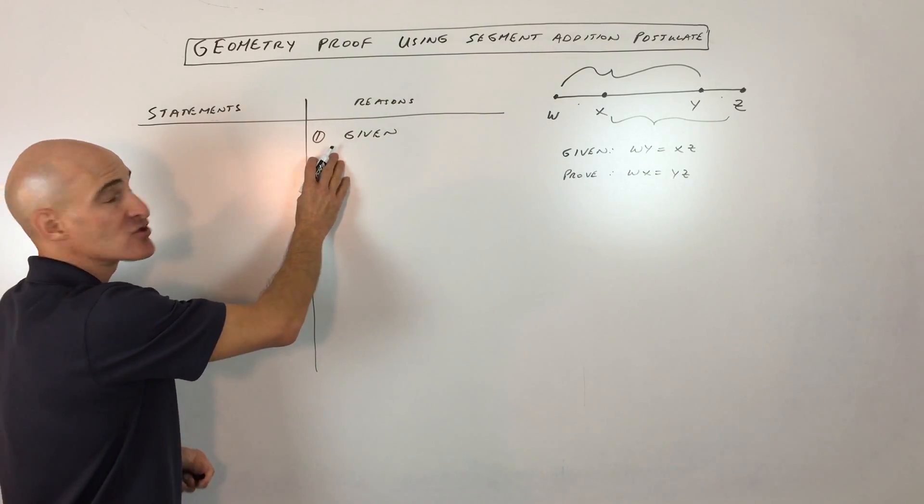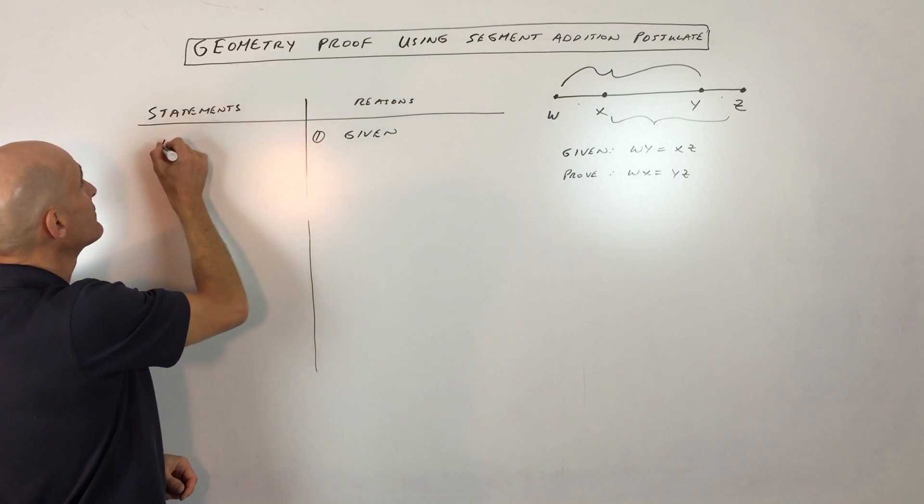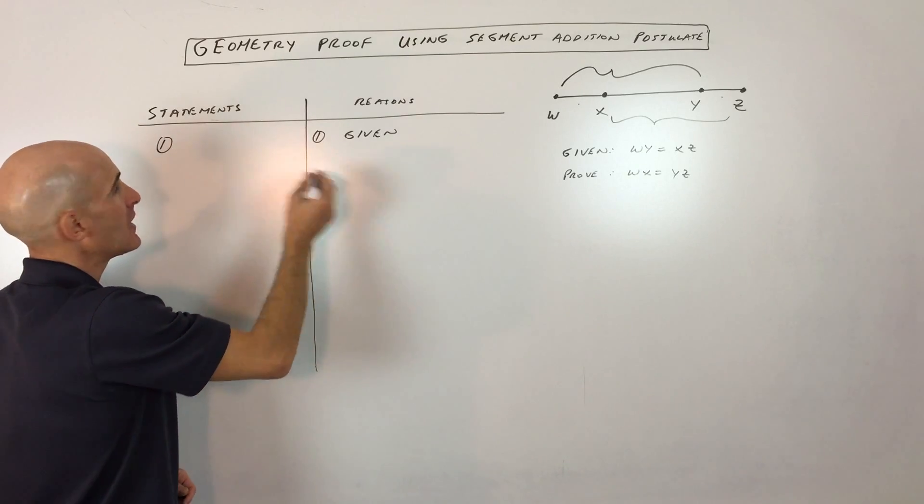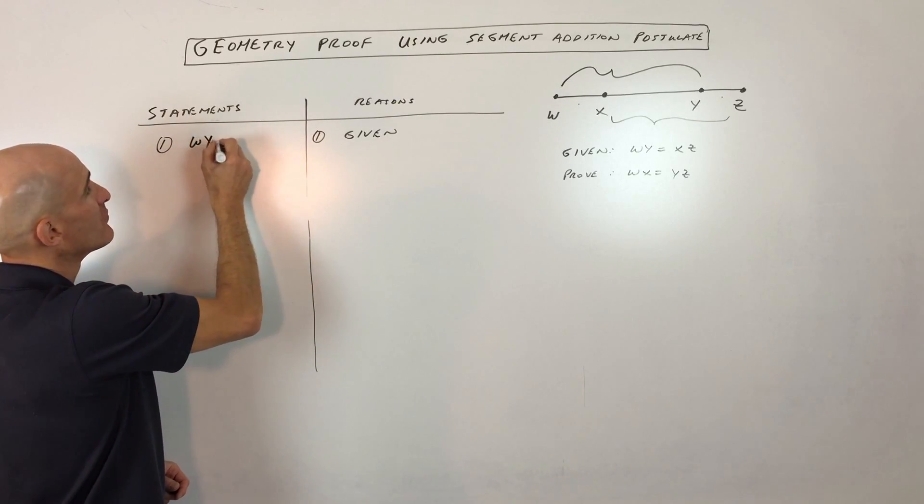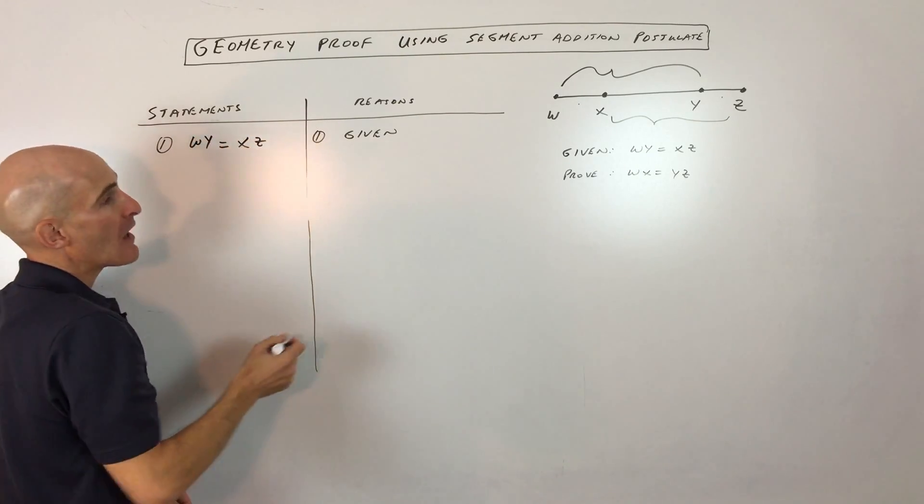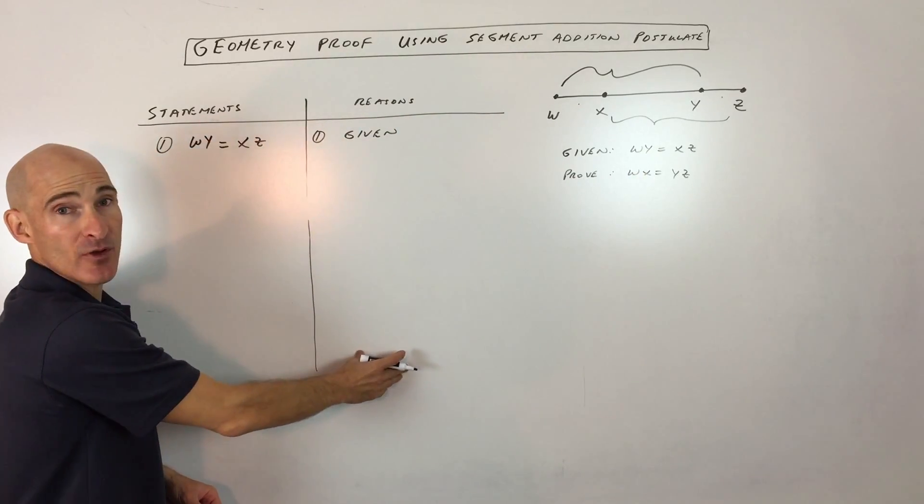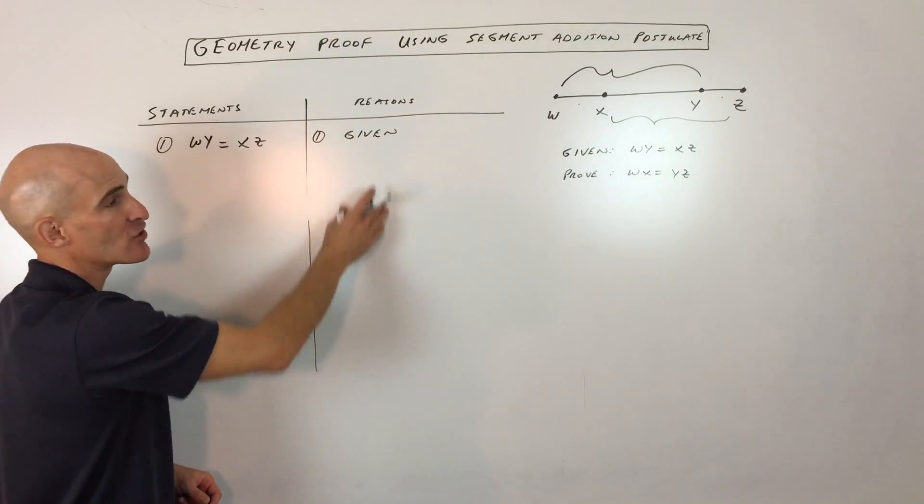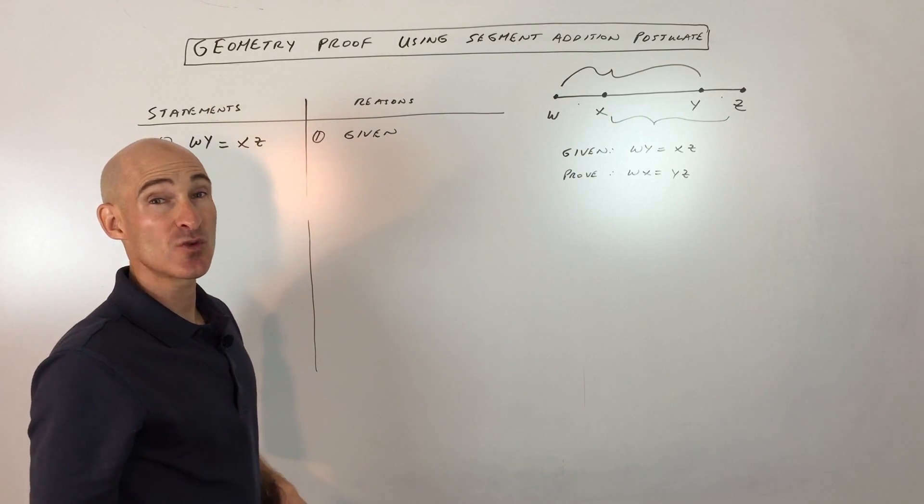So generally, I usually write the givens first just to kind of get that out of the way. And it just gets me started with the proof, kind of gets me going. And whatever you're trying to prove, that's always going to be the last step. So what we're trying to do is fill in those intermediate or in-between steps. So you're with me so far?